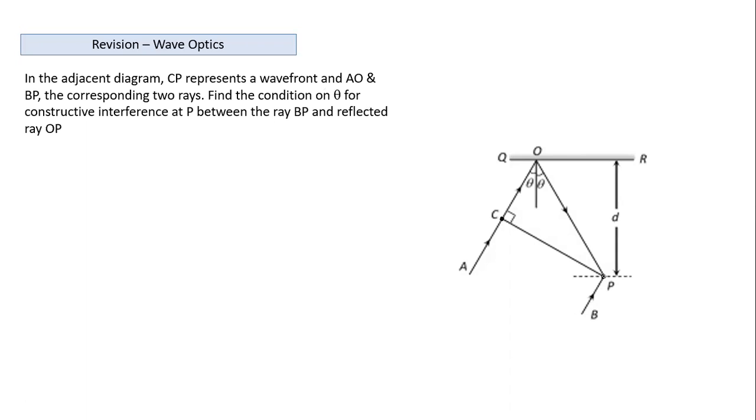This ray reaches point P. Even this ray also gets reflected from the mirror here and also reaches point P. Two rays are reaching point P, and are these two rays coherent rays? Yes, if they are from the same source coming up to reflection, they are coherent rays and they will undergo interference.